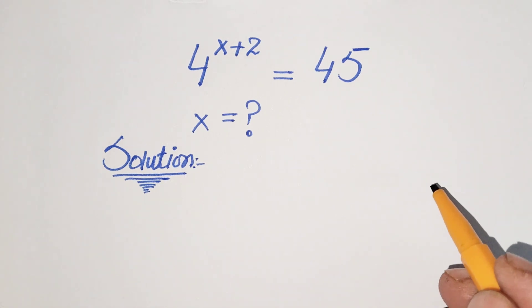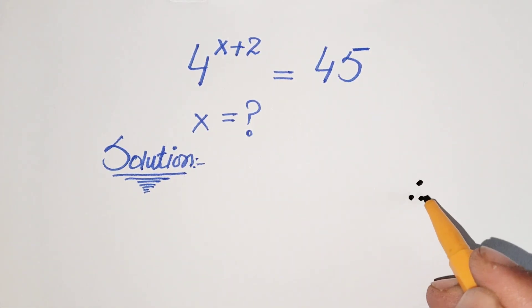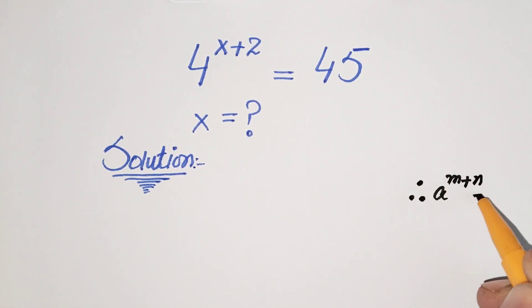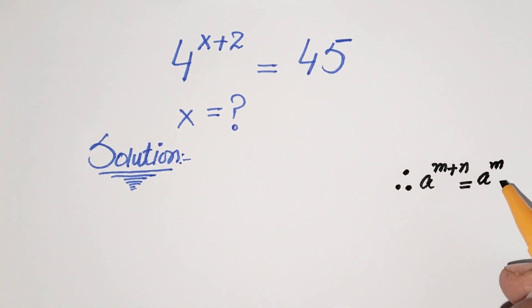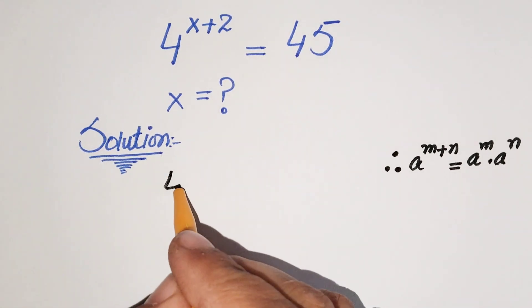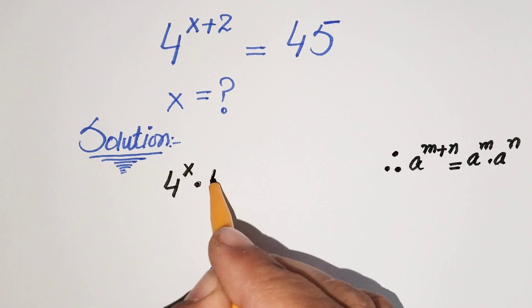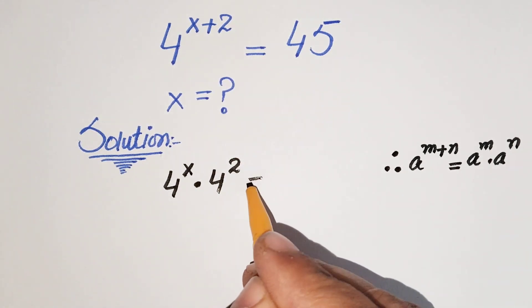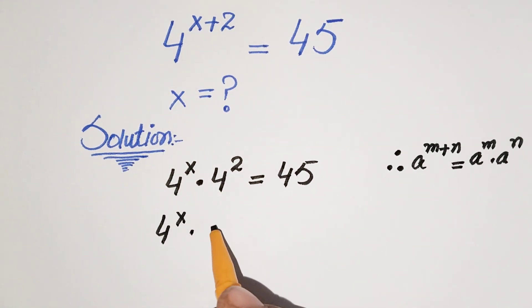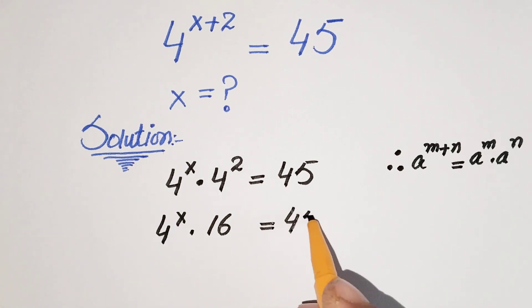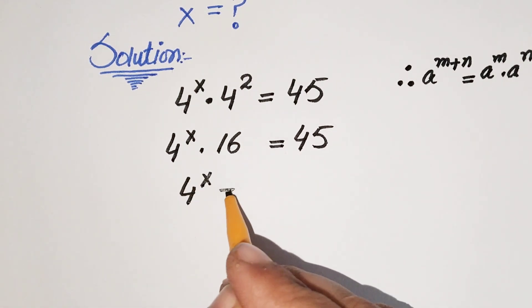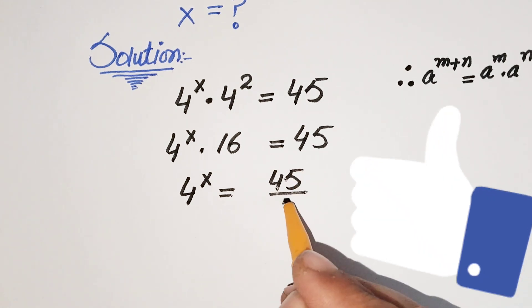In our first step, we use the exponential law: a raised to power m plus n is equal to a raised to the power m times a raised to power n. Using this property, we get 4 to the power x times 4 to the power 2, which is 4 squared, equal to 45. So 4 to the power x times 16 is equal to 45. Dividing both sides by 16, we get 4 to the power x is equal to 45 over 16.